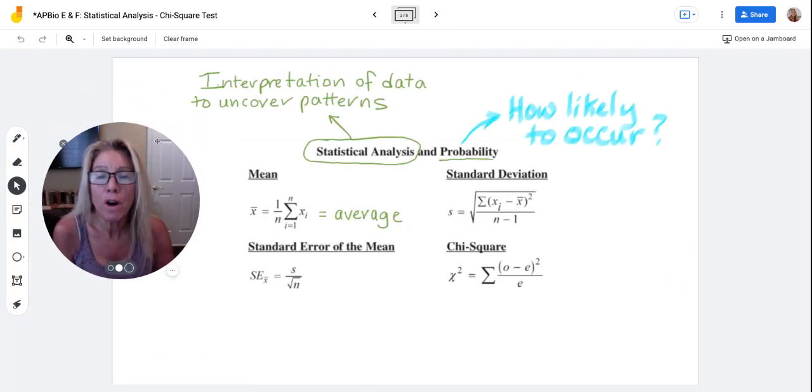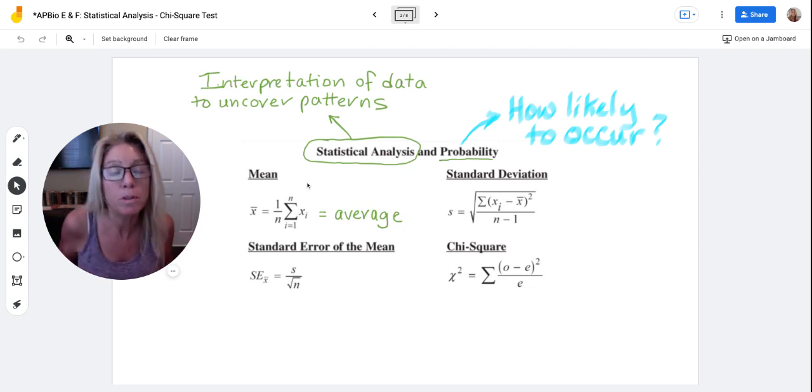First of all, under that portion of the formula sheet is statistical analysis and probability. Statistical analysis is the interpretation of data to uncover patterns and then probability just looks at how likely it is to occur.